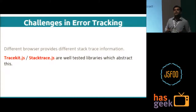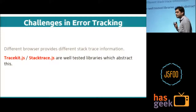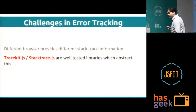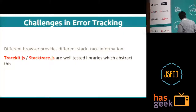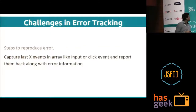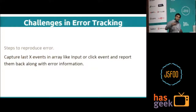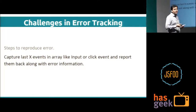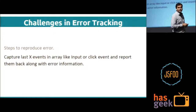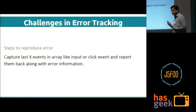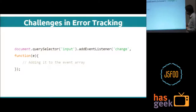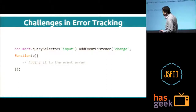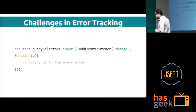Regarding stack trace normalization, there are third-party libraries named StackTrace and TraceKit — well-tested libraries that normalize the stack. Different browsers have different methods of accessing the stack, and these libraries normalize them to provide a single point for all stack information. For steps to reproduce errors: whenever a user interacts with anything in the application, log it in an array. Say you log 10 events in an array — whenever an error is encountered, send all 10 events attached to it so it can be replicated. A change listener attached to input tags logs whatever is typed into that array.